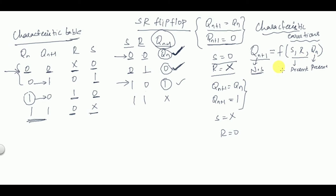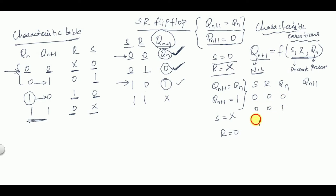To derive the characteristic equation, we write a truth table with three inputs: S, R, and QN. The eight input combinations are: 0 0 0, 0 0 1, 0 1 0, 0 1 1, 1 0 0, 1 0 1, 1 1 0, and 1 1 1.